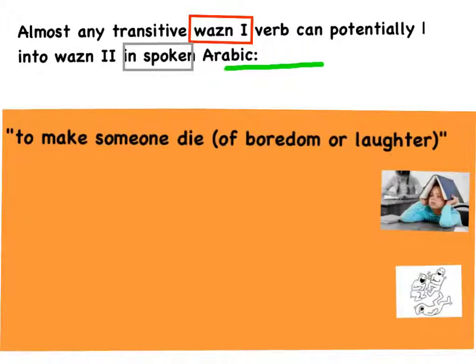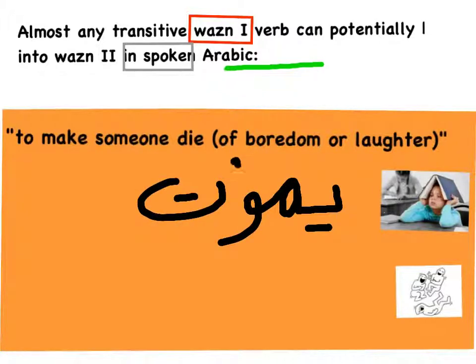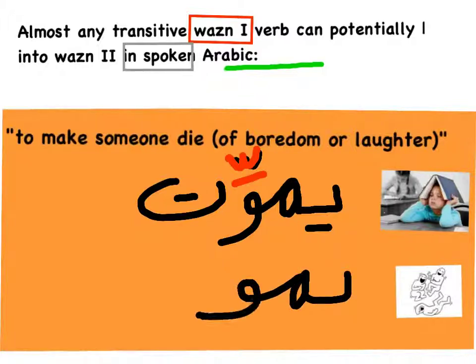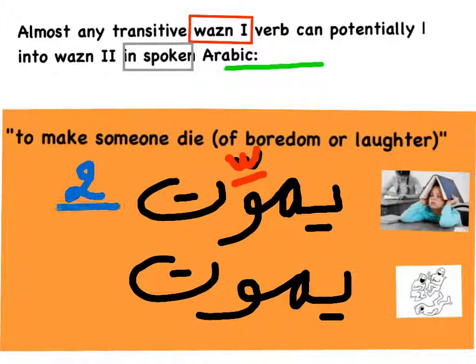For to make someone die of boredom or laughter, we have مَوَّت (mawwat) — form 2 — with a shadda. And it comes from مات (mat) or يموت (yamut) in standard and spoken Arabic, meaning to die. So this is form 2 derived from form 1.